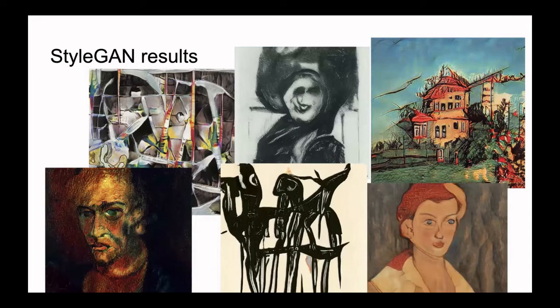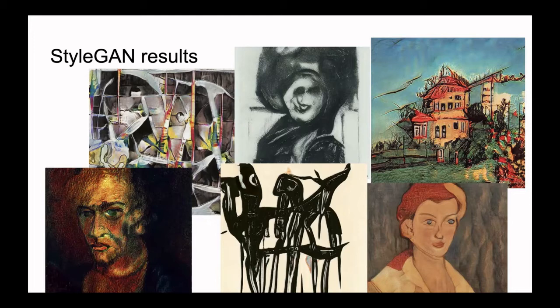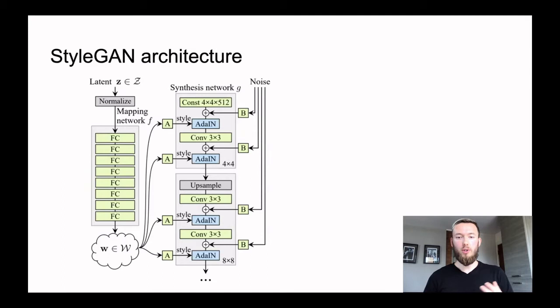These are results of StyleGAN — this model was used in the t-shirt site and it's already much better than what you saw in the previous slide. It's not the best we have today, but it's much better than all previous models. StyleGAN is a model from the NVIDIA AI lab and it has 1,000 by 1,000 resolution output images, which is really good. Let's look at this architecture — it's a little more sophisticated than the previous one, but we get more quality at the end.